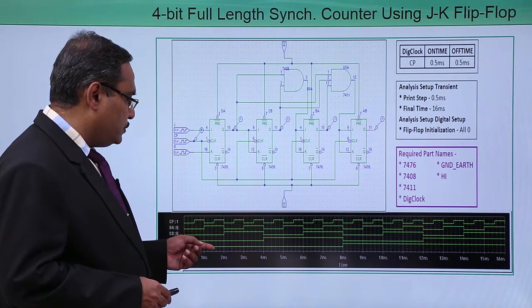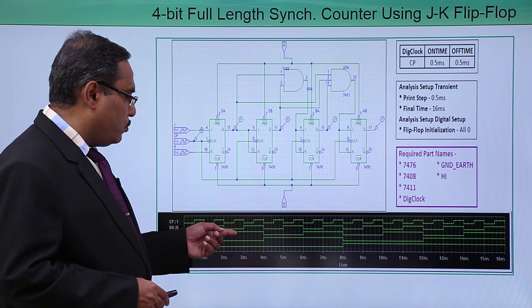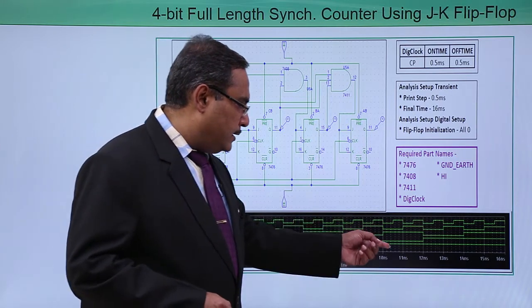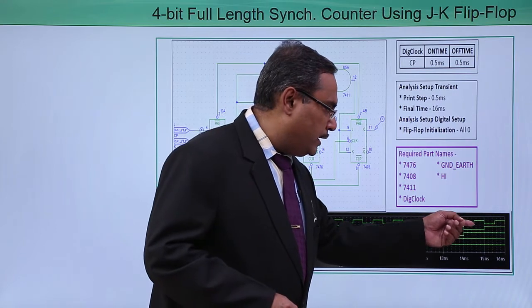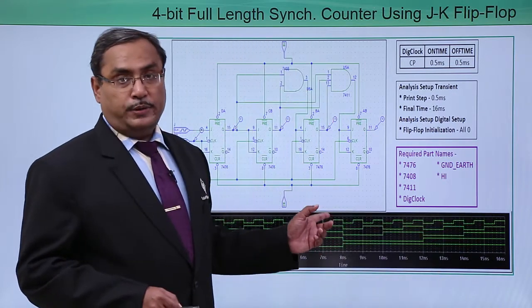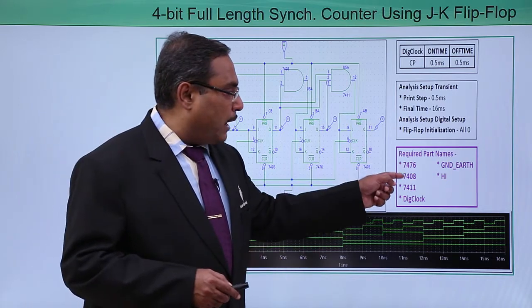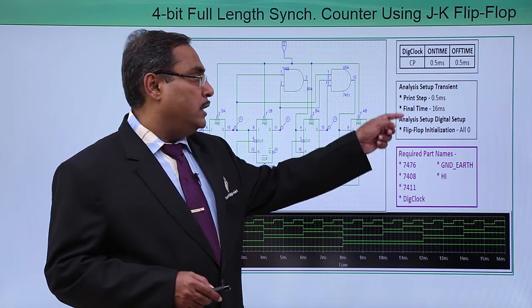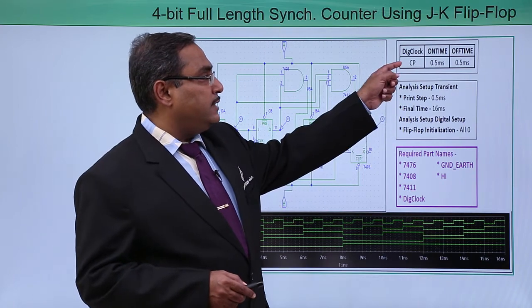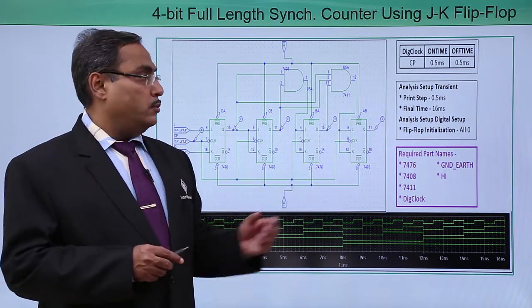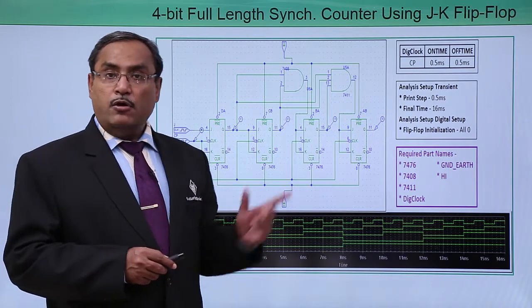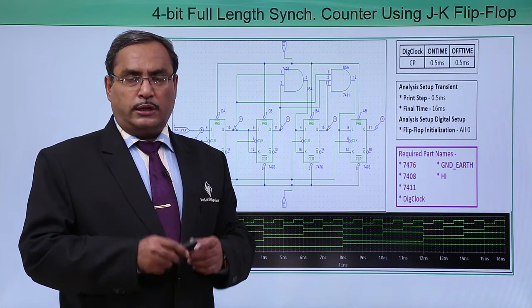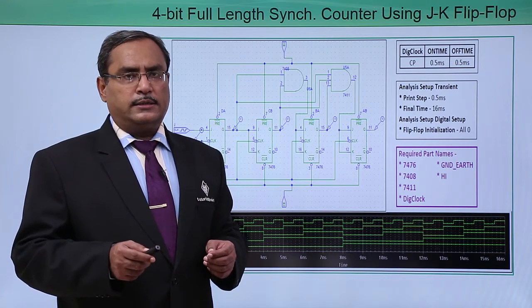The simulation output shows 0000, 0001, then 2, 3, 4, 5, 6, 7, 8, 9, 10, 11, 12, 13, 14, and 1111 which is 15. The parts list is provided; initialization to all-zero mode is mandatory otherwise the circuit will not work. The transient analysis setup and the digital clock on-time and off-time have been configured. From here you can design the circuit, or you can follow the demonstration video showing how to design and test the circuit in simulation mode.